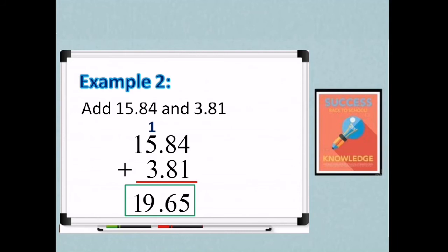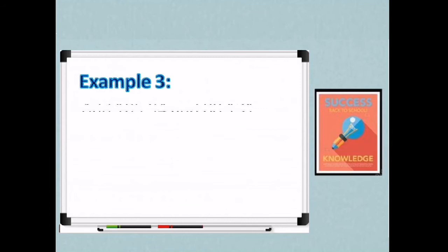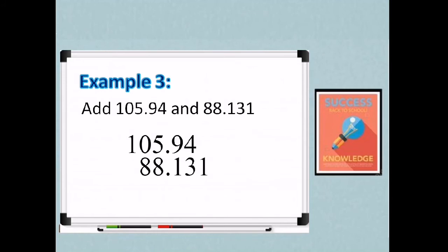So let's have our third example. So I hope na nasusunod niyo yung ating step. So add 105.94 and 88.131. So you have 105.94 and 88.131. So pwede ulit tayo mag-add ng 0 dun sa dulo para may katapat yung 1. Okay. So let's start adding. So 0 plus 1 is 1. 4 plus 3 is 7. Then 9 plus 1 is 10. So 0, carry 1. Then you have here your decimal point.